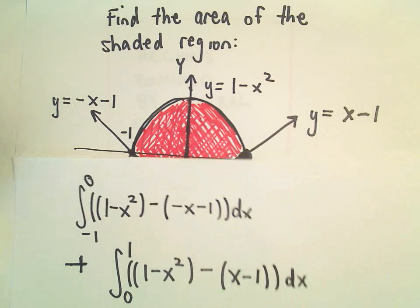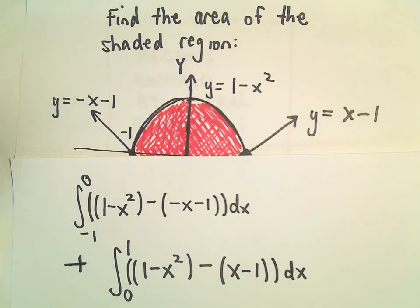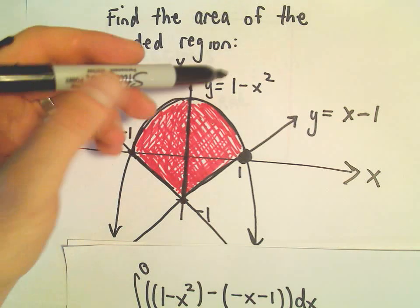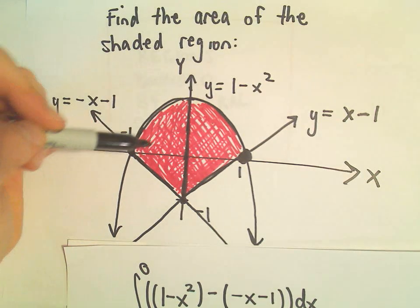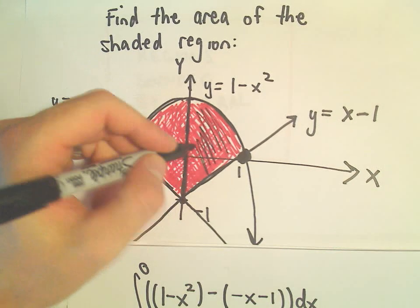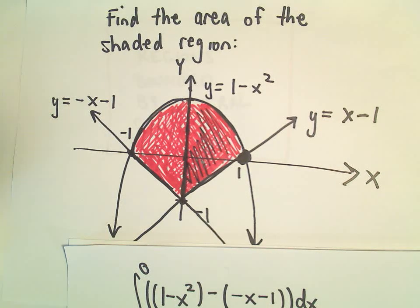So I think, again, you can convince yourself in this example, this is going to be a nice symmetric region. The region is symmetric about the y-axis.